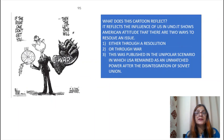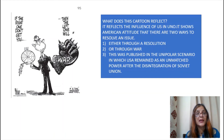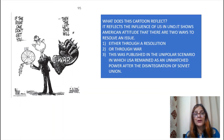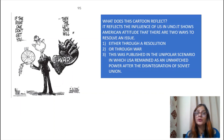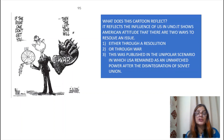The next cartoon reflects the influence of the US in the UNO. It shows the American attitude that there are two ways to resolve an issue — left or right — one side showing the UN symbol and the other showing war. The image in the middle represents the USA, which had considerable influence after the Cold War ended and the Soviet Union disintegrated, leading to the rise of a unipolar world. It shows that any issue could be solved either through a UN resolution or through war. This was published in the unipolar scenario in which the USA remained an unmatched power after the disintegration of the Soviet Union.